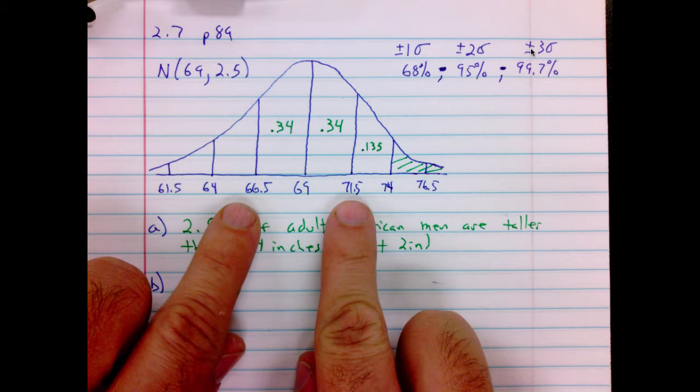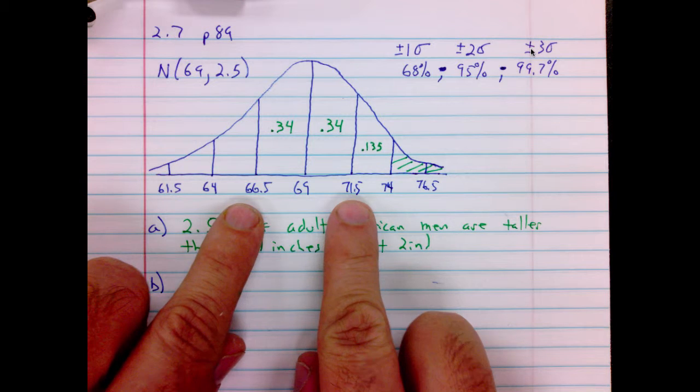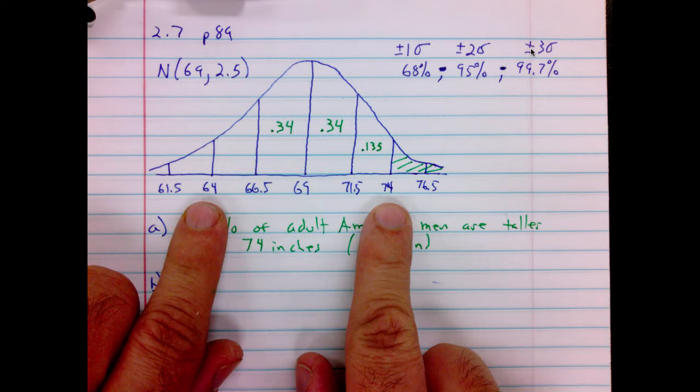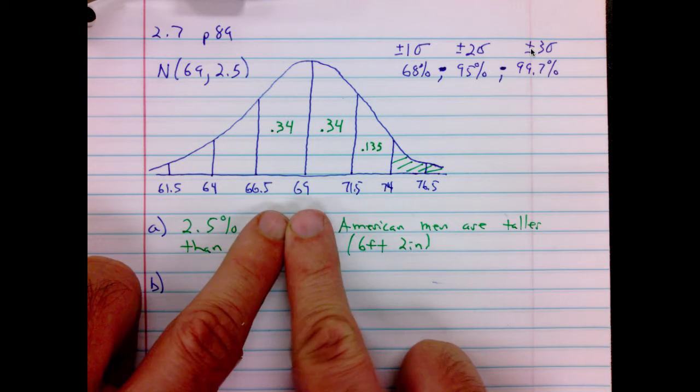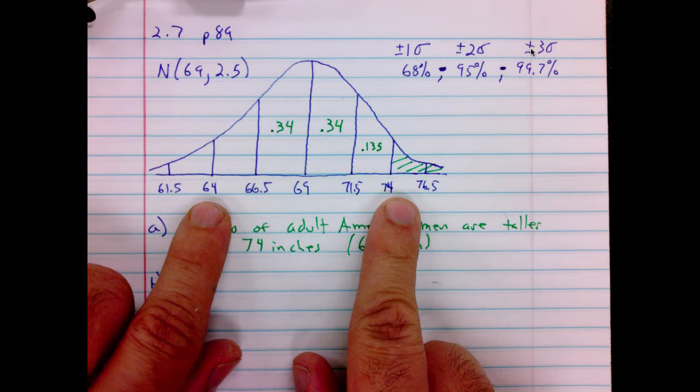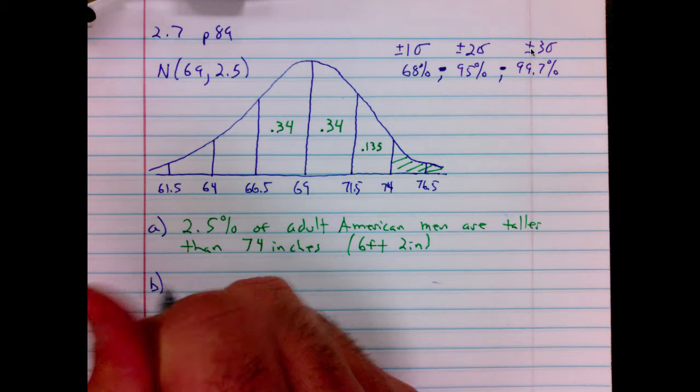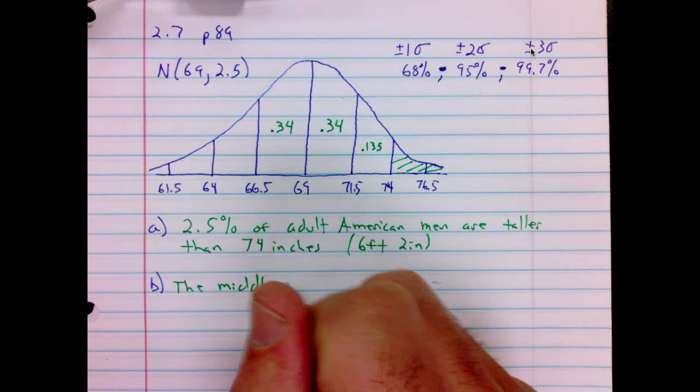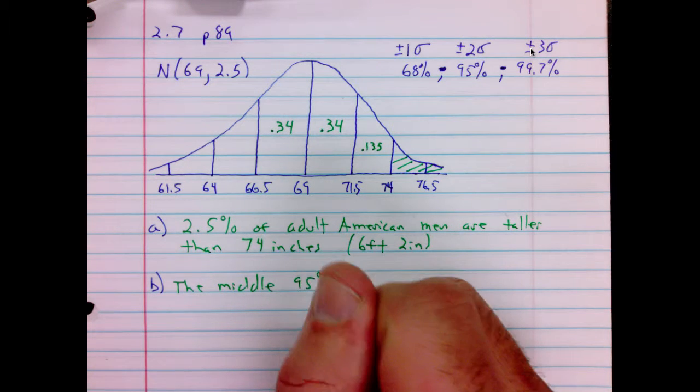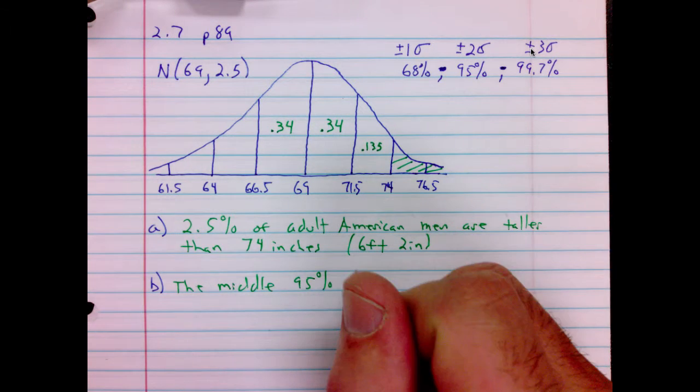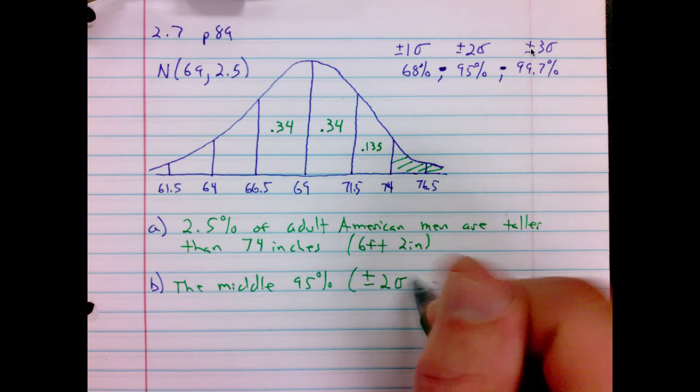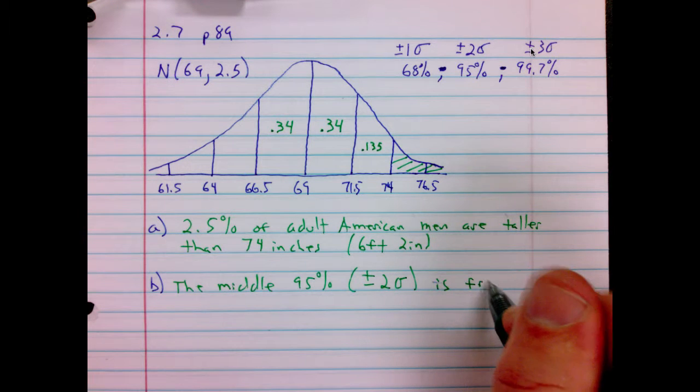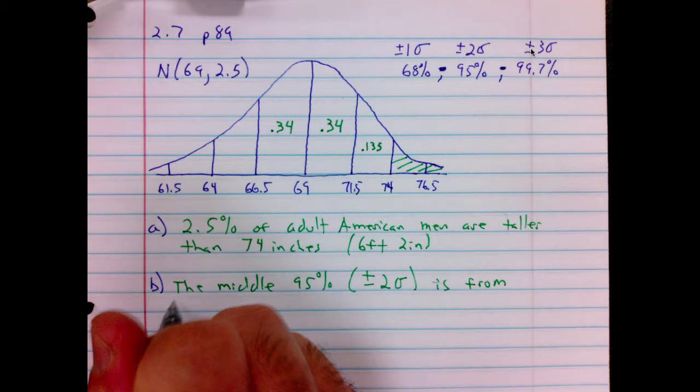69, one standard deviation, two standard deviations. Between 64 inches and 74 inches is the middle 95%.